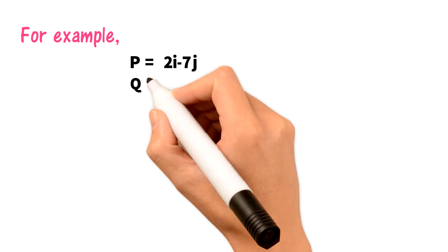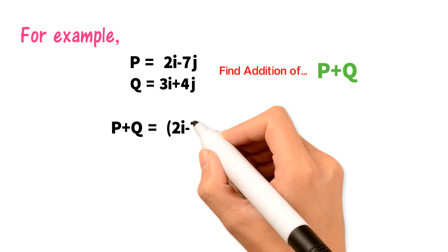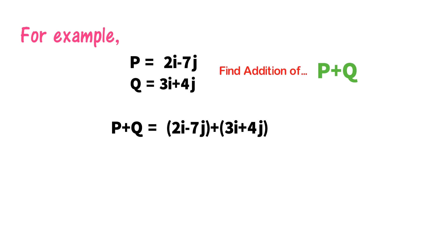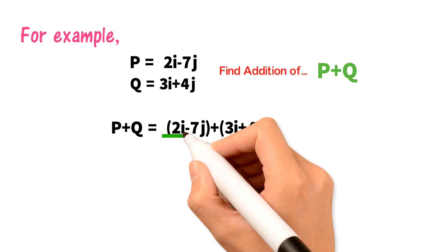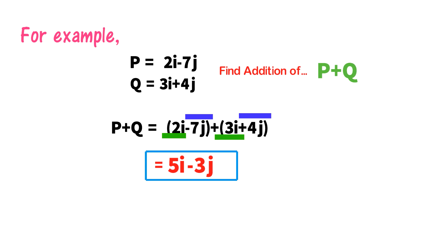For a numerical example, let p = 2i − 7j and q = 3i + 4j. To find p plus q, I add: (2i − 7j) + (3i + 4j). The x-components add together — i is the unit vector in the x-direction and j is the unit vector in the y-direction. So x parts: 2 + 3 = 5i, and y parts: −7 + 4 = −3j. Therefore p + q = 5i − 3j.